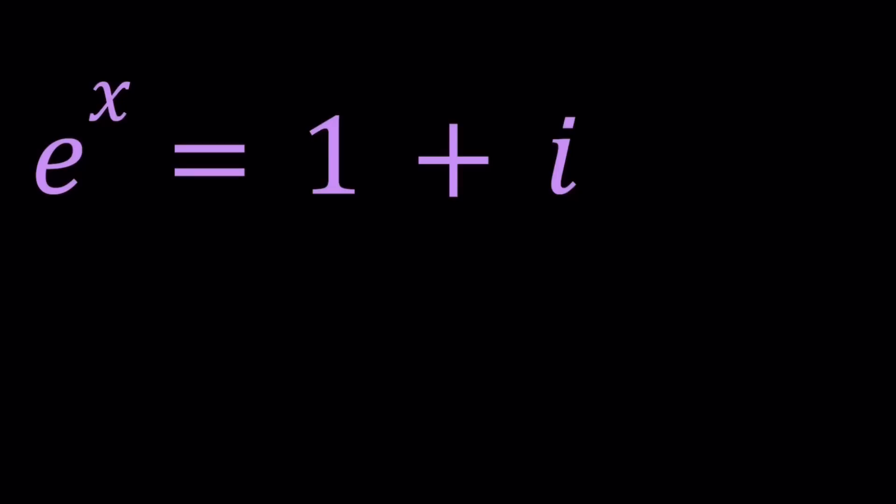i is the imaginary unit whose square equals negative 1. So we have a complex number 1 plus i which is equal to e to the power x and we're going to be solving for x values.